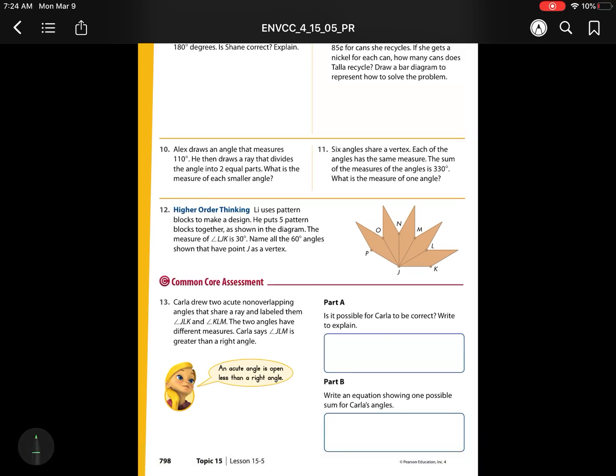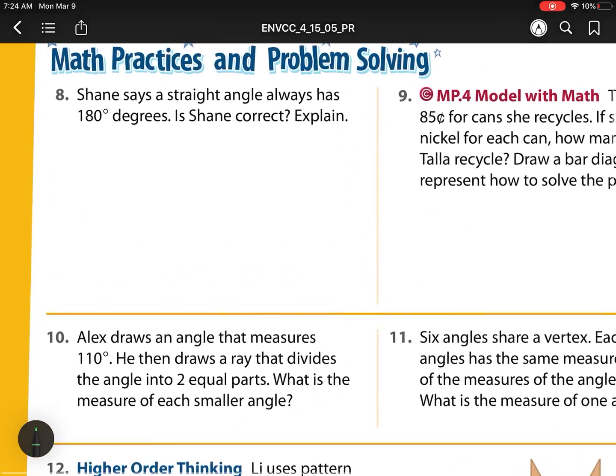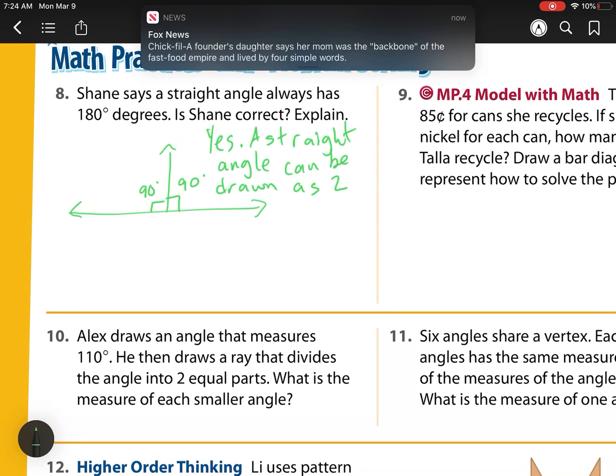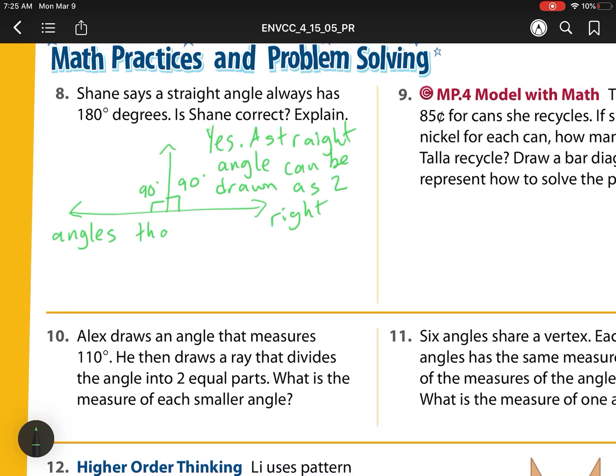Shane says that a straight angle is 180 degrees. Is Shane correct? Let's think about that. Here is a straight line. And I can break a straight line up by making this perpendicular. So I have a corner angle and a corner angle, which is 90 degrees and 90 degrees. And I can check that with a piece of paper and see that line straight up. So I'm going to say yes, he is correct.